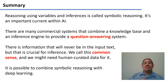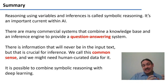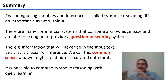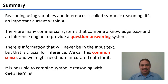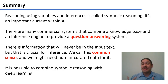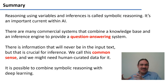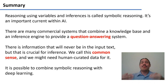In summary, reasoning using variables and inferences is called symbolic reasoning, and it's an important subfamily of artificial intelligence, alongside things like deep learning. There are many systems that combine knowledge bases — with entities, relationships, and attributes — together with inference engines to combine all of these into new knowledge; we call these question answering systems, and large commercial examples include Watson and Wolfram Alpha. Even though they're very large and very good, there's a lot of information about the world they will never know because it's not in the input text, so people have created crowdsourced common sense databases. It is also possible to combine symbolic reasoning with deep learning to create even more powerful question answering systems.